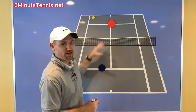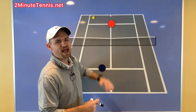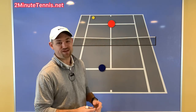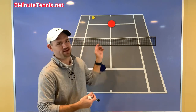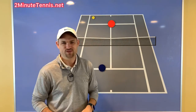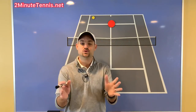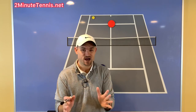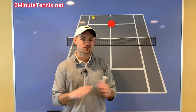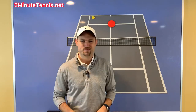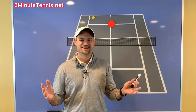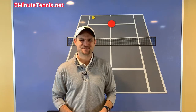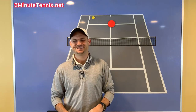When your opponent comes forward, aim low to their feet — half the time they'll screw it up and the other half they pop it up, you come in and go for the down-the-line pass. Use the two-shot passing shot strategy and there is no doubt you're going to gain confidence, win more matches, and play much better tennis. This is Ryan Reedy from twominutetennis.net — you got this!